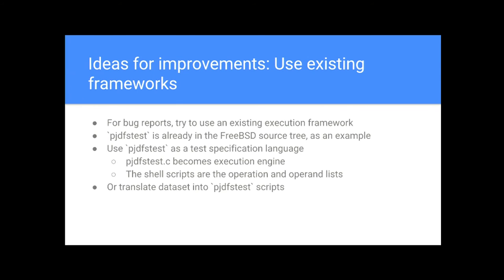Going forward: if you're testing an open source kernel, find out what execution engine they're already using. In the FreeBSD tree there's pjdfstest, created for ZFS testing, with an execution engine in C and shell scripts. I could probably write a filter that converts my data set to that format, or use those shell scripts as my data format. When working with open source, try to use their tools instead of your own. A second improvement: I cheated by focusing on operations and ignoring objects. I could hook into DTrace to get a list of operations and parameter types, and automate generation of those operations much better than I hacked it together.